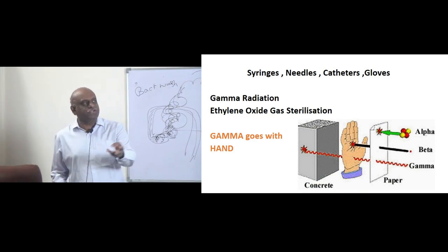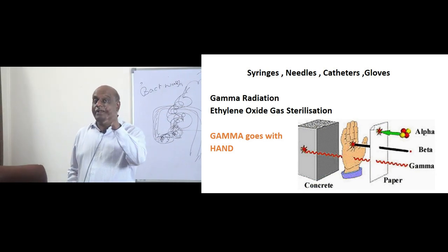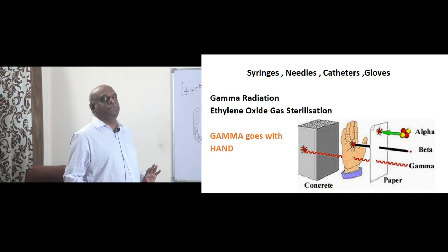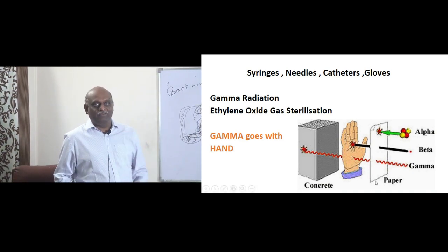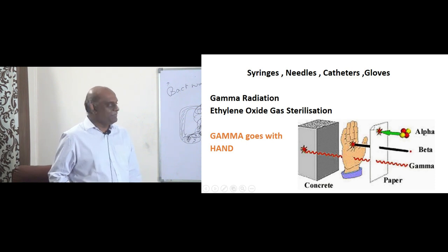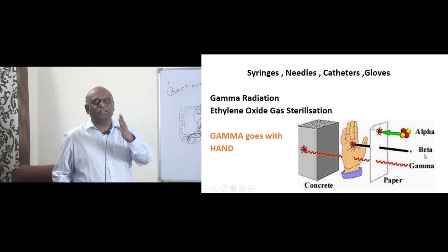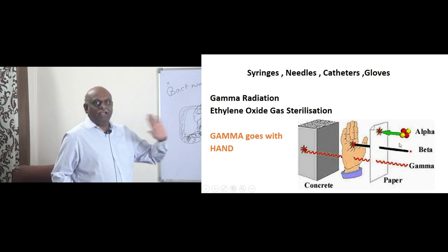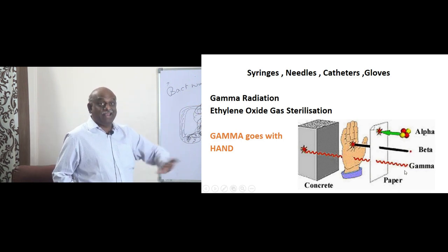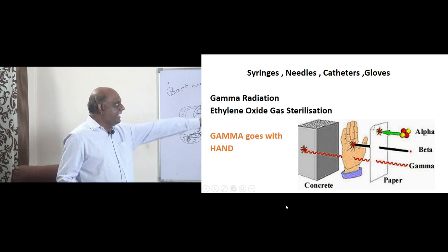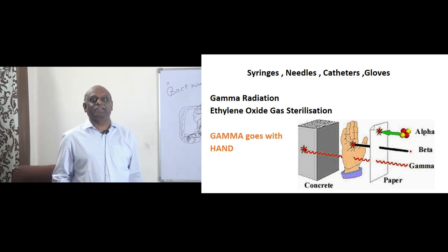Syringes, needles, catheters, gloves — gamma radiation and ethylene oxide are used. How do you remember it? In childhood we studied in physics: alpha rays, even one thin paper can stop them. Beta — your palm can stop it. Gamma can pass through your palm and even through concrete. It has higher penetration.